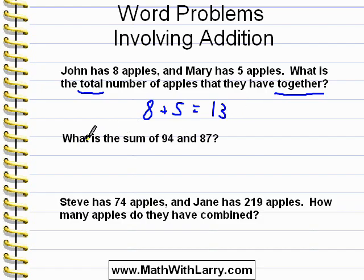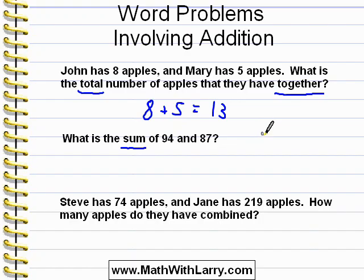Let's take a look at this problem. What is the sum of 94 and 87? For this problem, you simply have to know the definition of sum. Otherwise, you just can't do the problem. The sum is what you get when you add numbers together — we call that the sum. So this tells us just to add these two numbers together. We'll simply do 94 plus 87, and we will get 181 as our answer.